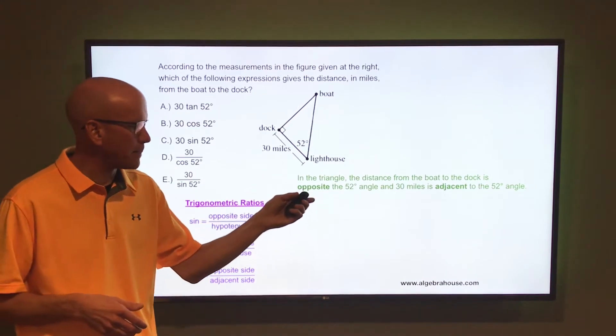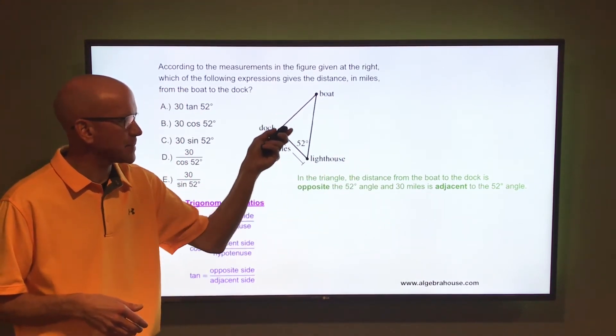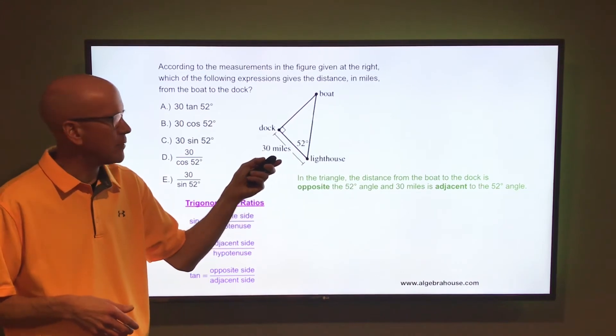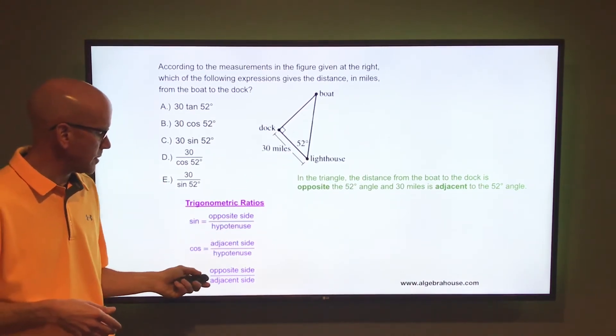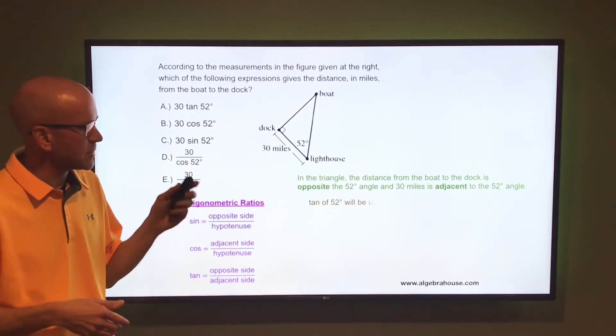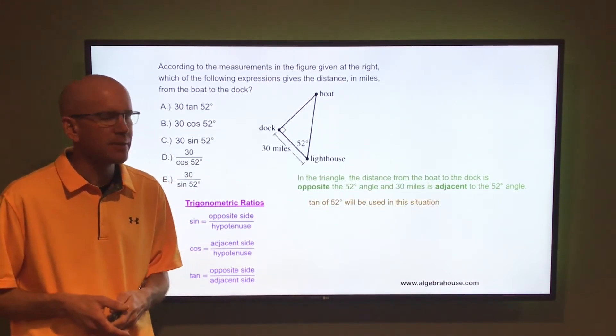So we're using opposite and adjacent. Boat to the dock is opposite the 52 degrees and the 30 miles is adjacent to the 52 degrees. So with opposite and adjacent, we're going to be using the tangent of 52 degrees in this situation.